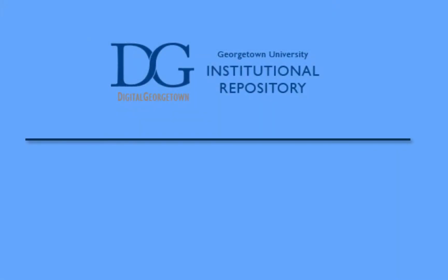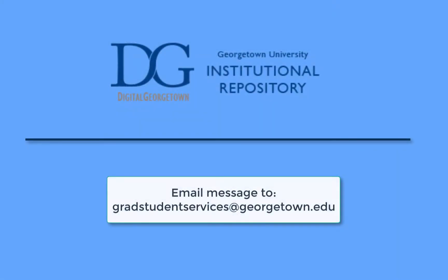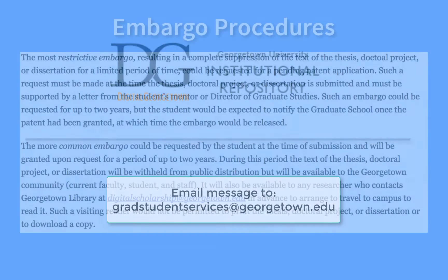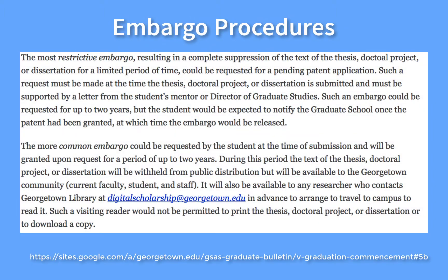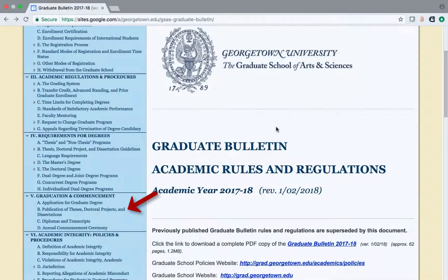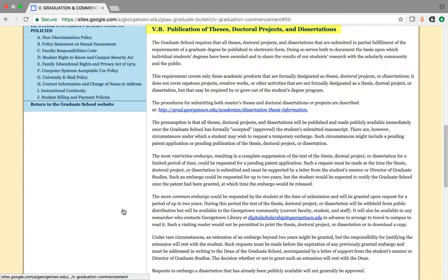To request that your work be embargoed in Digital Georgetown, send your request to gradstudentservices@georgetown.edu. Once submitted, the embargo request is reviewed by the Graduate School according to the embargo policy as set out in the Graduate Bulletin under Publication of Theses and Dissertations.